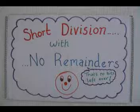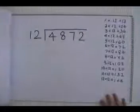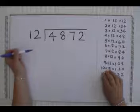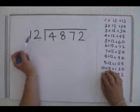Short division with no remainders. In this example we are going to work the sum 4872 divided by 12.